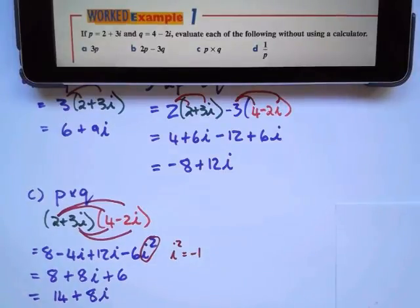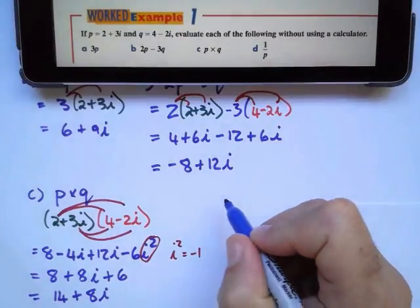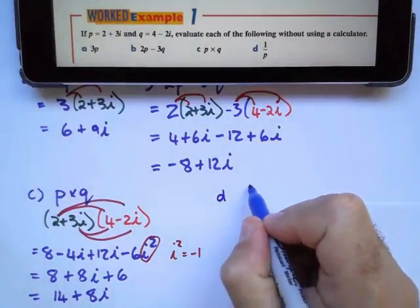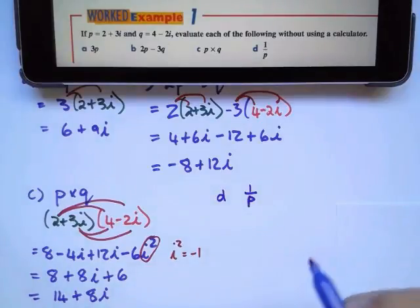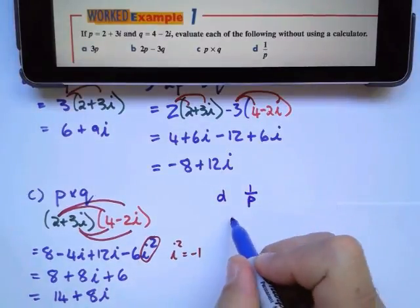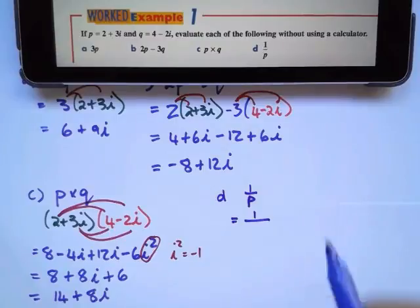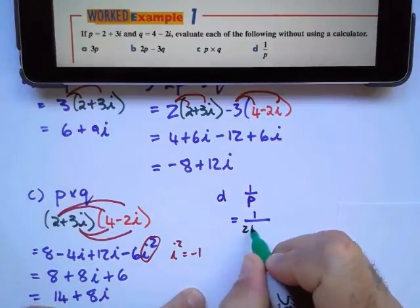For part d, I'm going to reduce my font size so it can actually fit in. I have d equals 1 divided by p. If I'm going to substitute this, I'm going to have 1 over p, which was 2 plus 3i.